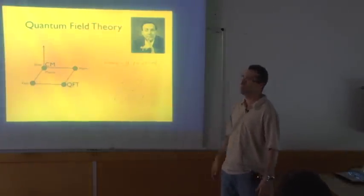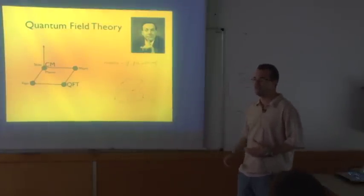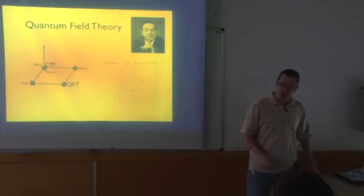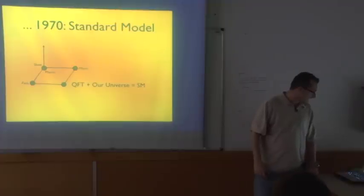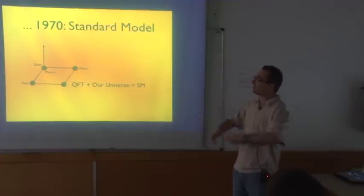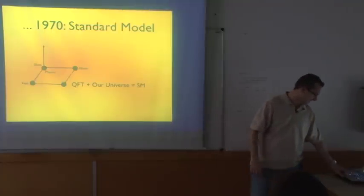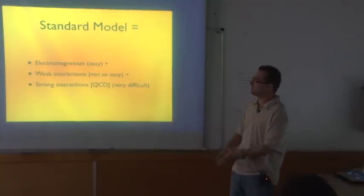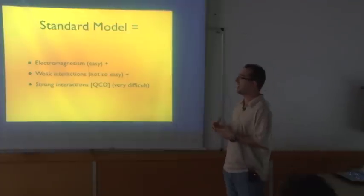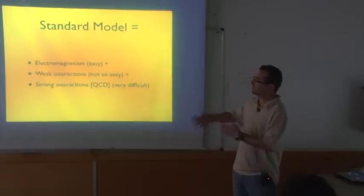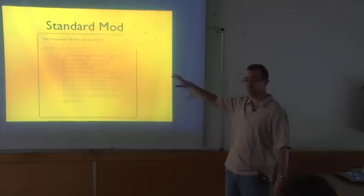Quantum field theory tells you that you don't predict the trajectories of particles. You compute the probability that given a state, you end up in another state. You compute that by evaluating all possible evolutions of the system and weighting them. If you take this mathematical formalism and apply it to our universe, you get what's called the Standard Model of Particle Physics. It includes a description of electromagnetism, weak interactions, and strong interactions — which are responsible for atomic decay.